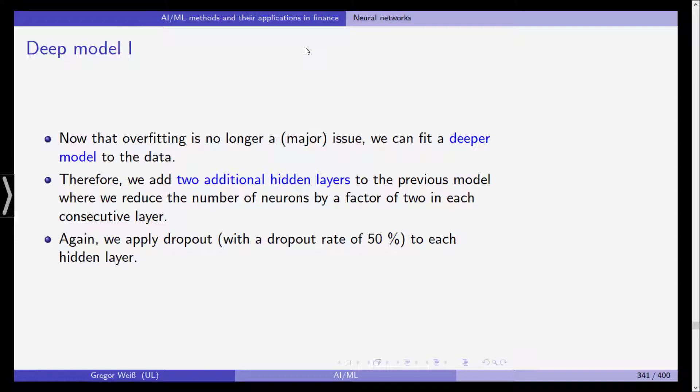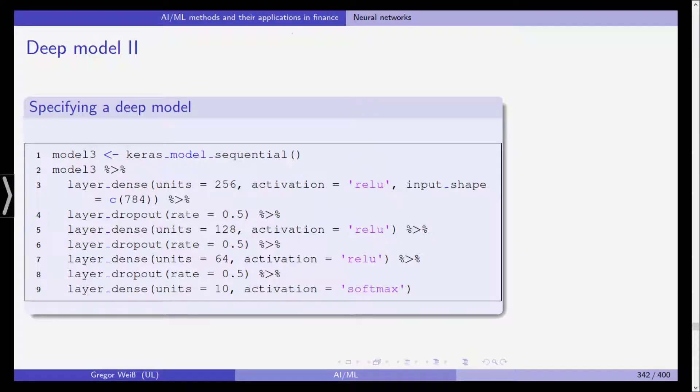So we want to fit a deeper model and therefore we add two additional hidden layers to our multi-layer perceptron. Actually before that it was only a single layer perceptron. We now add two additional hidden layers and we reduce the number of neurons by a factor of two in each consecutive layer. So it gets more sparse as we move upwards to the outputs. And again we apply dropout with a dropout rate of 50% to each hidden layer for regularization of our neural network. So we now have a truly multi-layer perceptron.